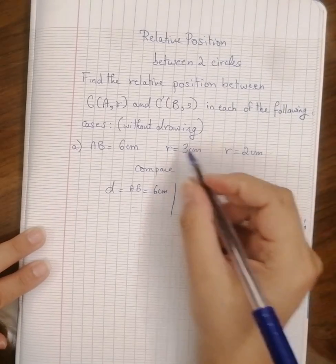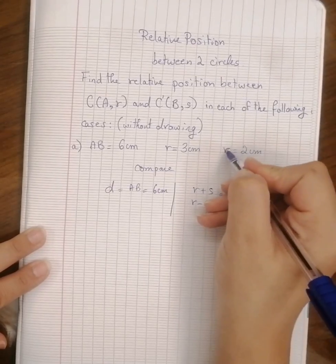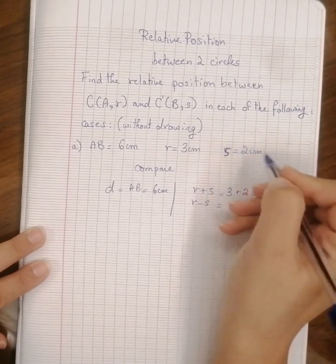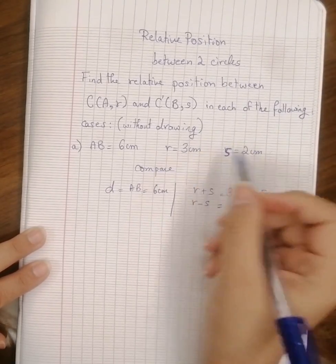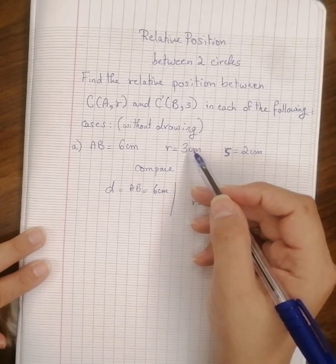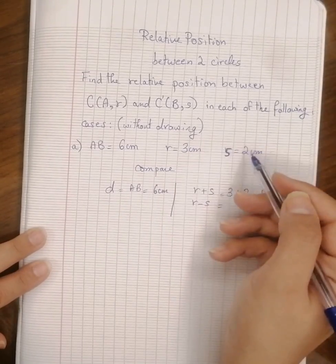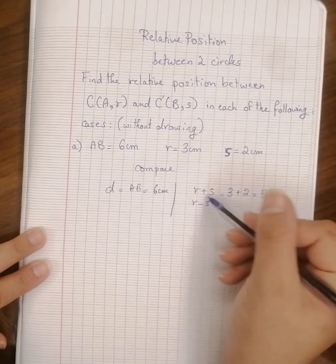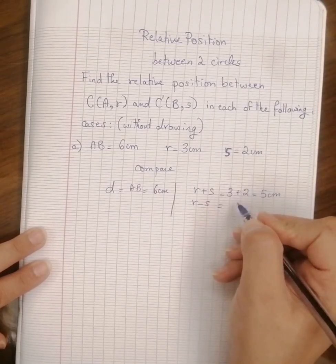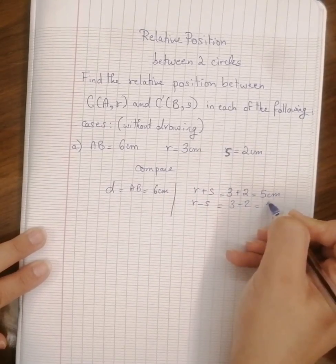Now r minus s. What do we mean by r minus s? We mean we have to subtract, of course, the greater radius from the smaller, because length is always positive. So 3 minus 2, we get 1 cm.